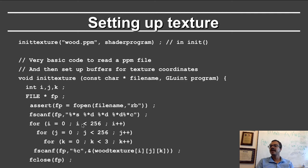FP is the file pointer. The PPM format starts with a line which usually says P6, then has the width and height of the file, and then the maximum character value which is usually 255, followed by a newline. We skip this initial header part. Then it just has the colors where each RGB color is a single character in English reading order from left to right, and I'm reading that into the wood texture.